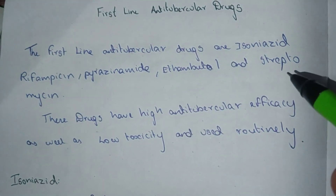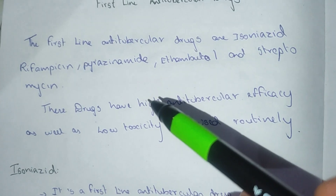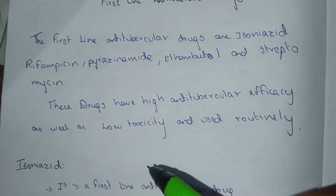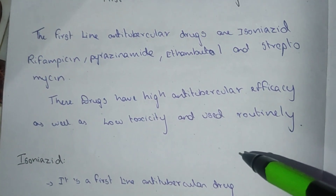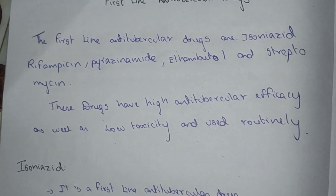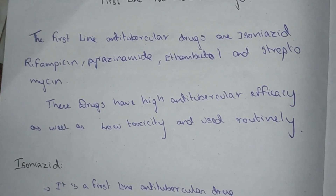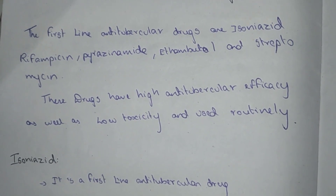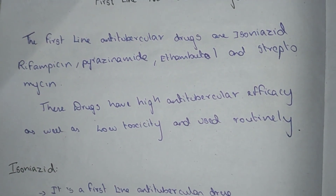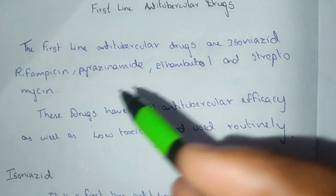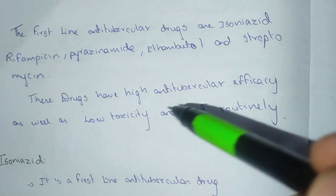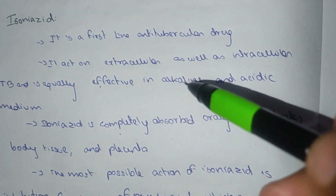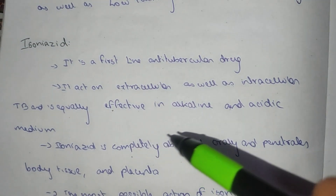The first line of anti-tuberculous drugs are Isoniazid, Rifampicin, Pyrazinamide, Ethambutol, and Streptomycin. These drugs have high anti-tuberculous efficacy as well as low toxicity and are used routinely. This first line of drugs acts extracellular as well as intracellular in TB, and is equally effective in alkaline and acidic medium.